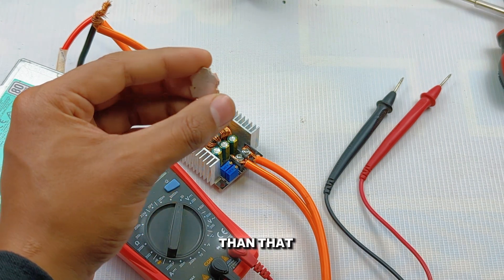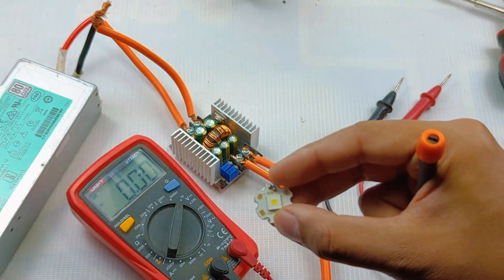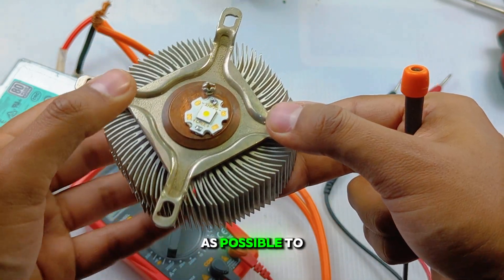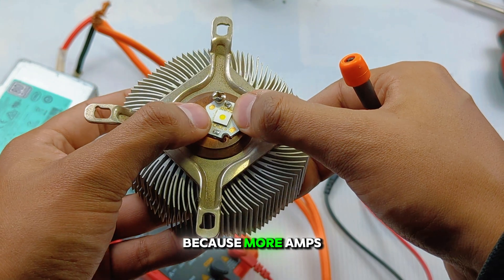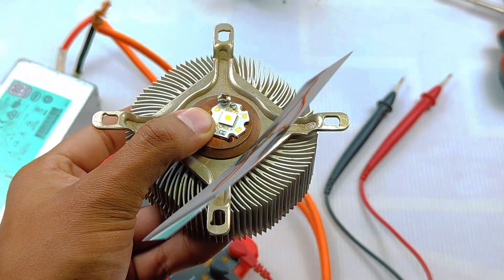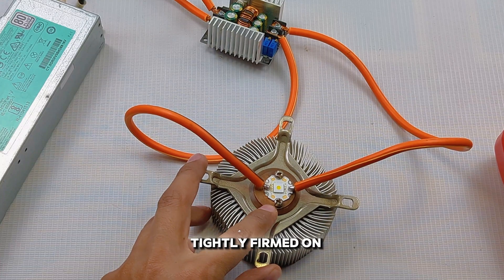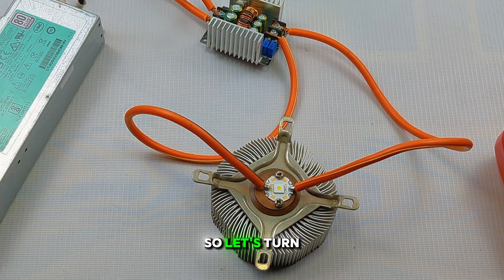Let's first mount it on a copper heat sink to dissipate as much heat as possible and cool the LED down, because more amps means more heat. All set. Now the LED is tightly mounted on the heat sink. Let's turn on the power supply.